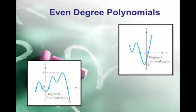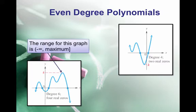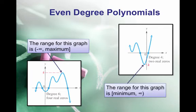Even degree polynomials have a restricted range. If we have an even degree polynomial where both ends are pointing down, then that polynomial is going to attain some maximum value, so our range will be negative infinity to that maximum value, as we can see on the left. On the right, with both ends pointing up, that polynomial attains a minimum value, and the range is that minimum value to positive infinity.